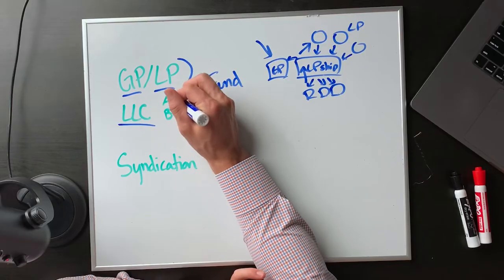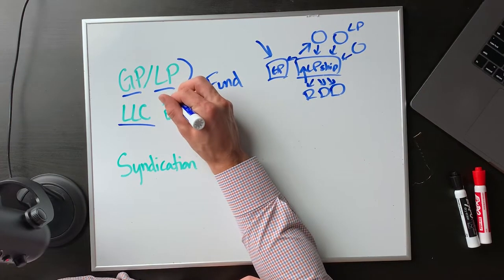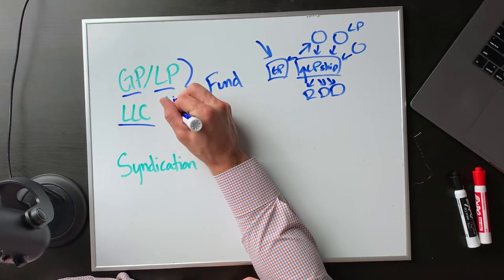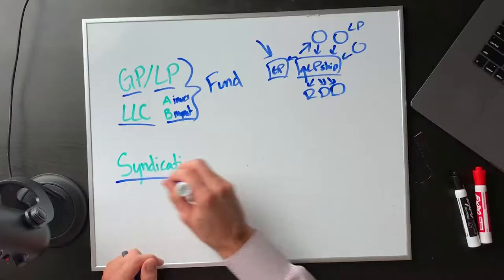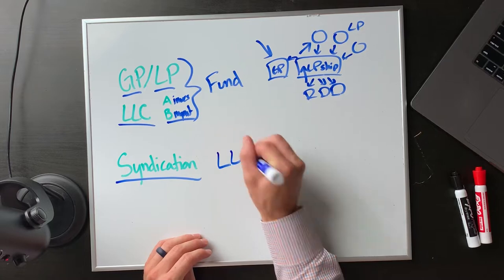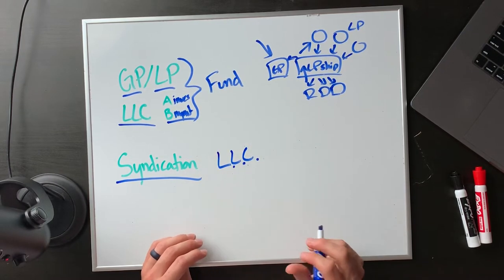In close second, a lot of funds are now doing an LLC type of fund. LLC funds have class A shares and class B shares. Class A shares are your investors and class B shares are your management team. You call them class A because your investors feel great — they have class A shares. But in reality, the class B shares manage and control the fund. And then finally, below that, we have syndication deals — typically just a simple LLC, limited liability company.